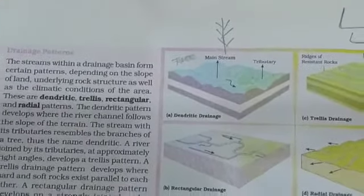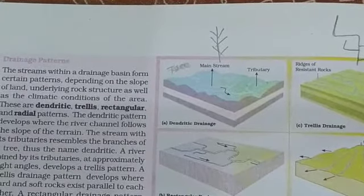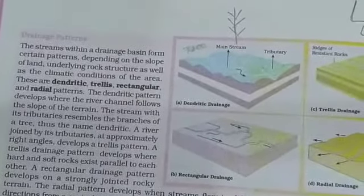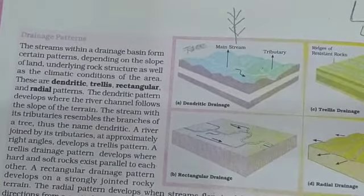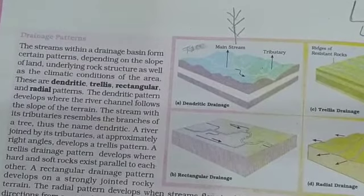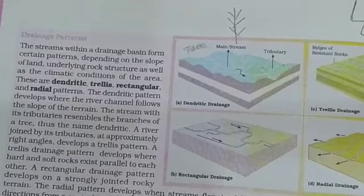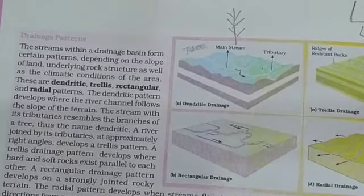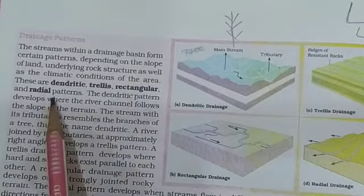Drainage patterns. The streams within a drainage basin form certain patterns. When there is a river or stream, the patterns created depend on the slope of the land and the slope of the area. These are the dendritic, trellis, rectangular, and radial patterns — four patterns in total.